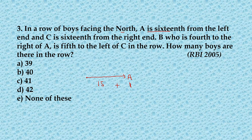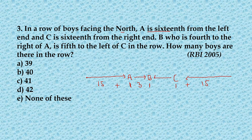A is at the 16th position, so this becomes 15 plus 1, that is 16. Then C is 16th from the right end, so there are 15 people towards his right and C is at the 16th spot. B is fourth to the right of A and also fifth to the left of C, meaning four people are between C and B. We simply add all the numbers: 15 plus 1 plus 3 plus 1 plus 4 plus 1 plus 15, and we get the answer 40.